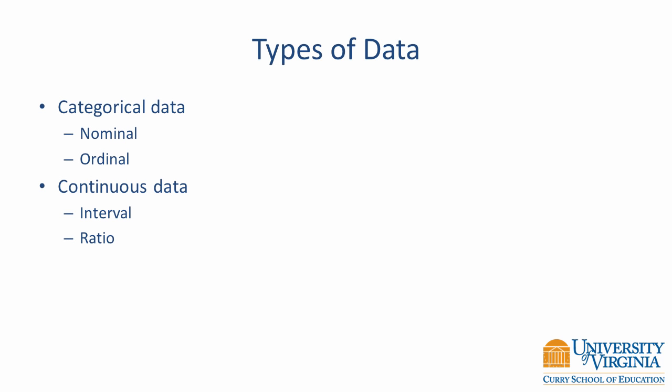When identifying the type of data for a variable, it is helpful to first decide whether the data are categorical or continuous, and then identify whether the data are nominal, ordinal, interval, or ratio.